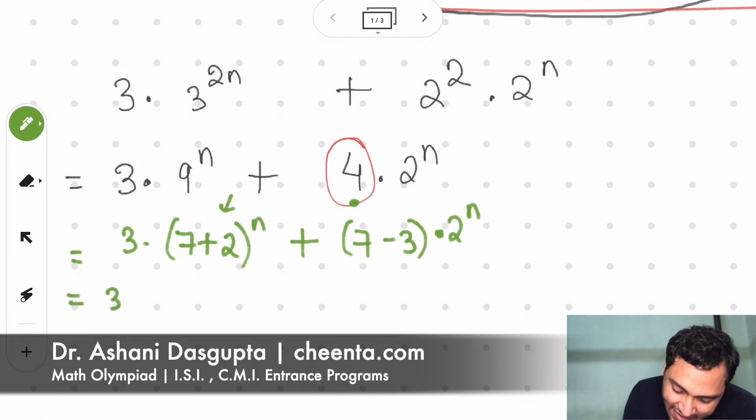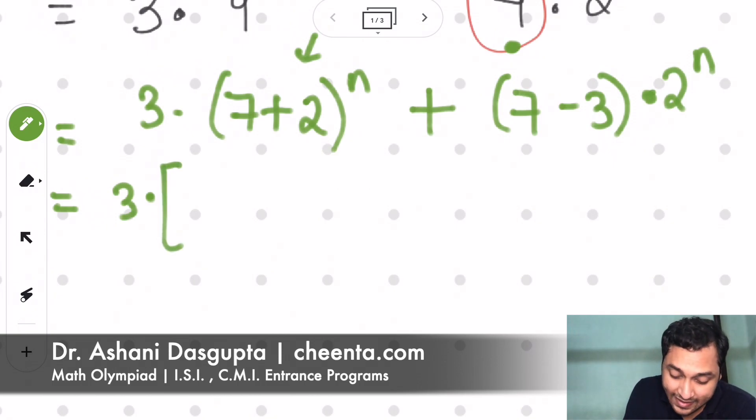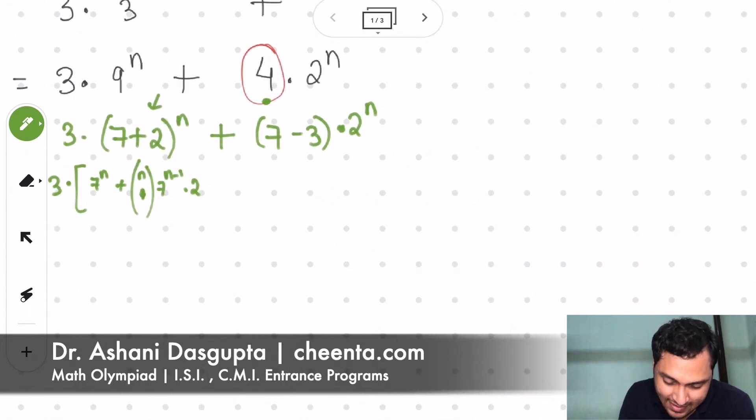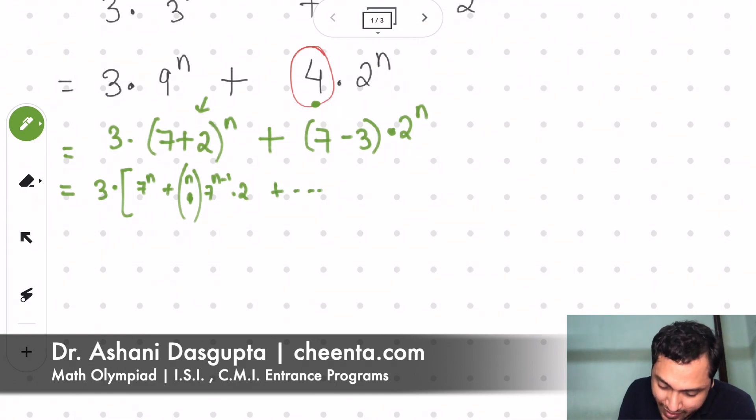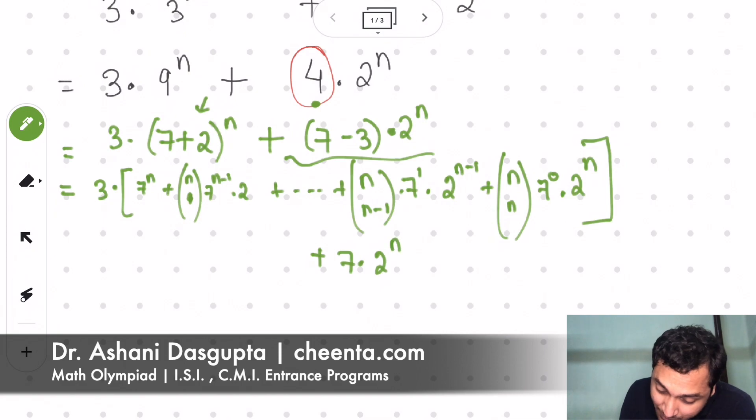So now I will use binomial theorem to expand this particular expression. So what will I get? I'll get 3 times—I'll just put it in the bracket—7 to the power n plus n choose 1 times 7 to the power n minus 1 times 2, and so on, up to n choose n minus 1 times 7 to the power 1 times 2 to the power n minus 1, plus n choose n times 7 to the power 0, which is 1, times 2 to the power n. And I'll expand this one. This is plus 7 times 2 to the power n minus 3 times 2 to the power n.